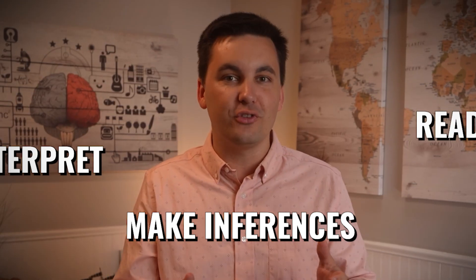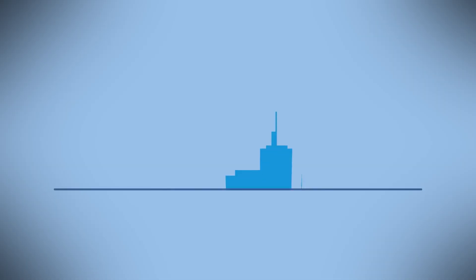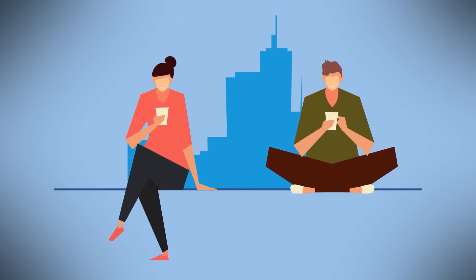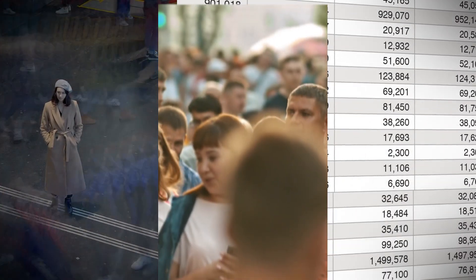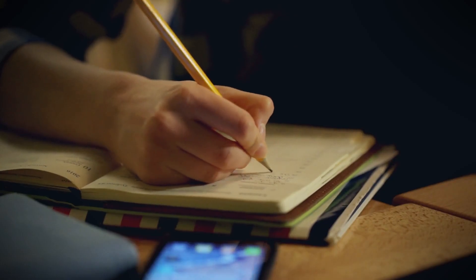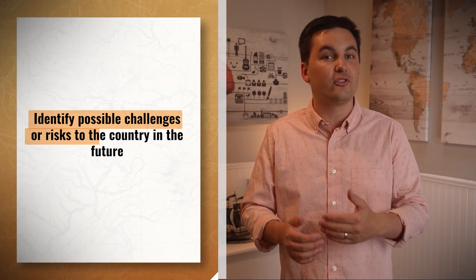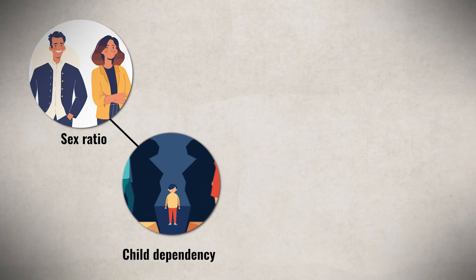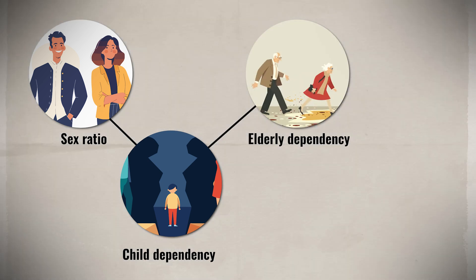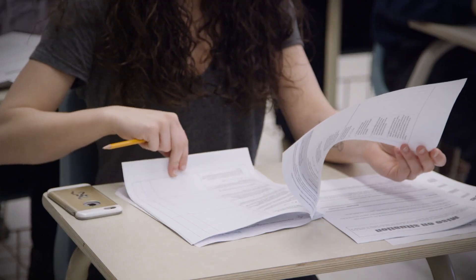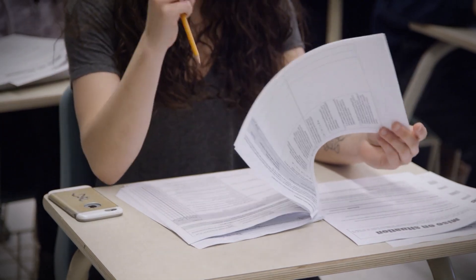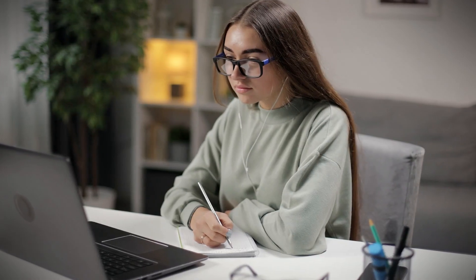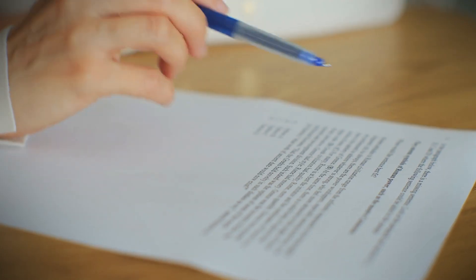The next concept you will for sure see on your test is population pyramids. The big thing I want you to focus on is being able to read, interpret, and make inferences about countries based on their pyramids. Remember, a population pyramid is a snapshot in time — it gives us insight into the past, present, and future of a society. Be ready to answer questions that have you look at a pyramid and identify possible challenges or risks to the country in the future. Make sure you can connect data in a pyramid to the sex ratio, child dependency ratio, elderly dependency ratio, and the demographic transition model.